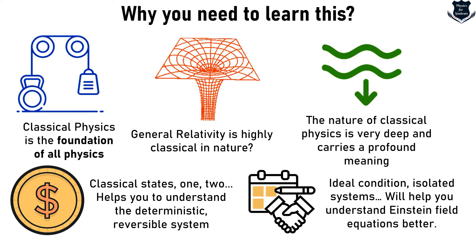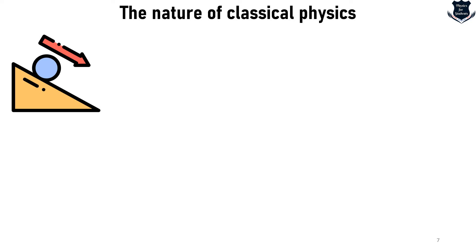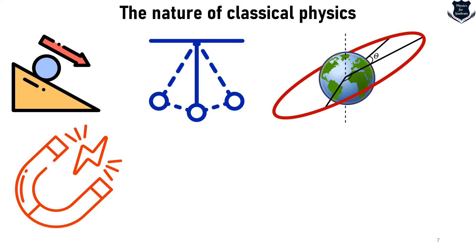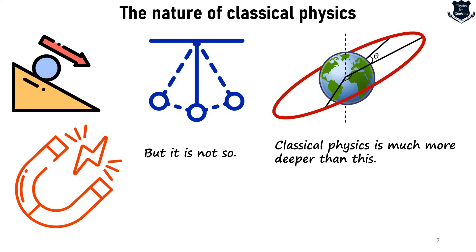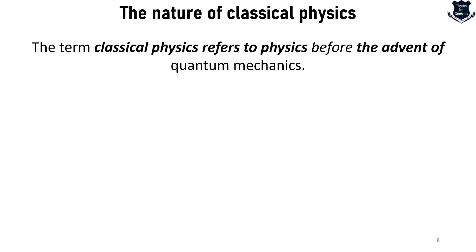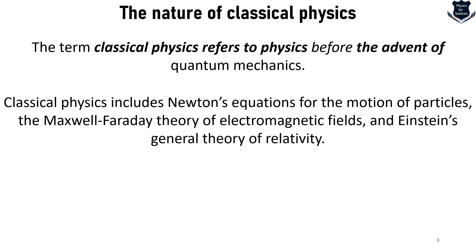I lay full stress upon learning classical physics. The general notion is that classical physics means laws of motion — a ball falling, a pendulum swinging, celestial bodies moving, electricity, or magnetism — but it is much, much deeper than this. Classical physics has a nature, just like human beings, and this nature is the pivotal force that drives all the laws of the universe. When we talk of classical physics, we mean everything before the advent of quantum mechanics: Newton's equations of motion, Maxwell-Faraday laws of electromagnetism, and Einstein's general theory of relativity.